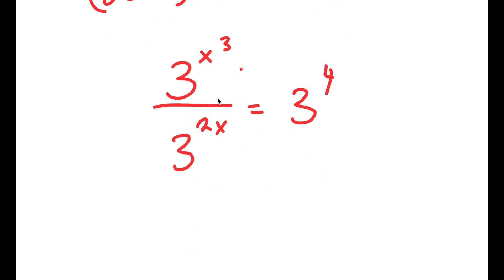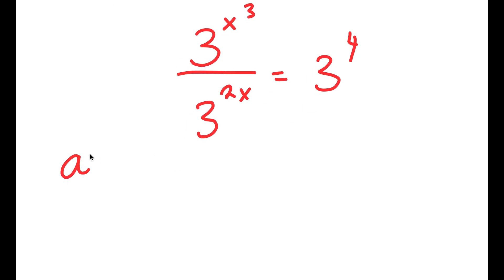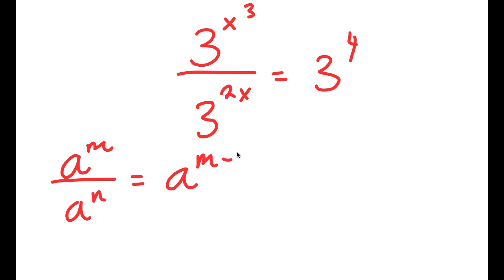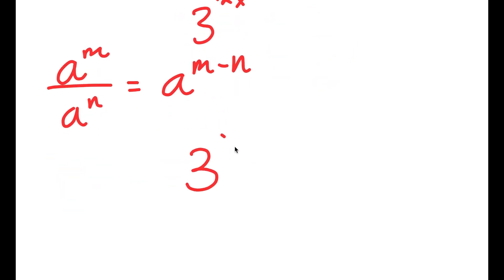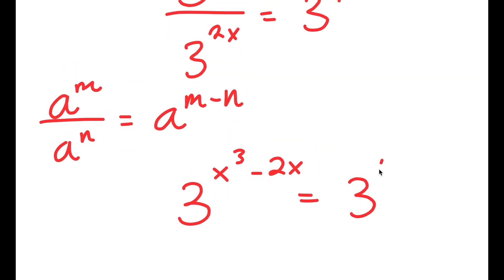Now notice how I have everything in the base of 3, which is going to make it much easier to solve. If I have something in the form a to the power of m over a to the power of n, this is equal to a to the power of m minus n. So 3 to the power of x to the power of 3 over 3 to the power of 2x equals 3 to the power of x to the power of 3 minus 2x, which is equal to 3 to the power of 4.